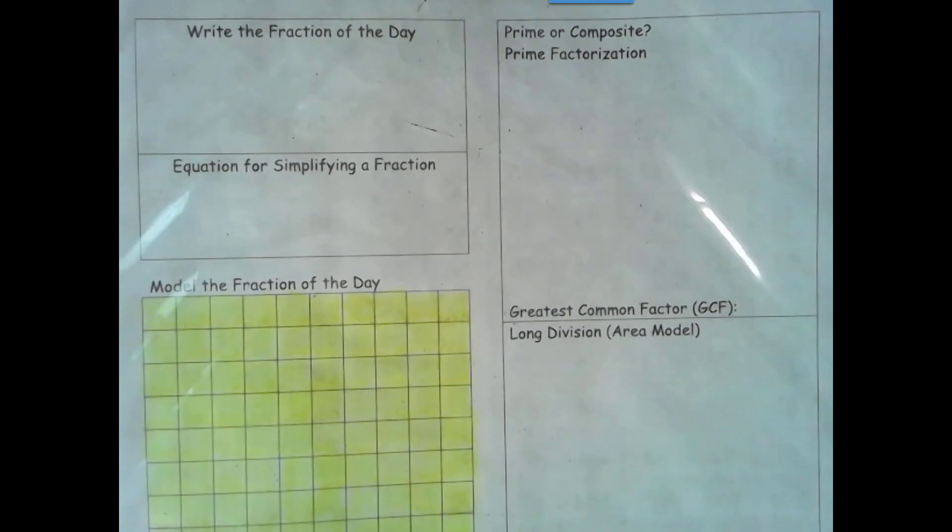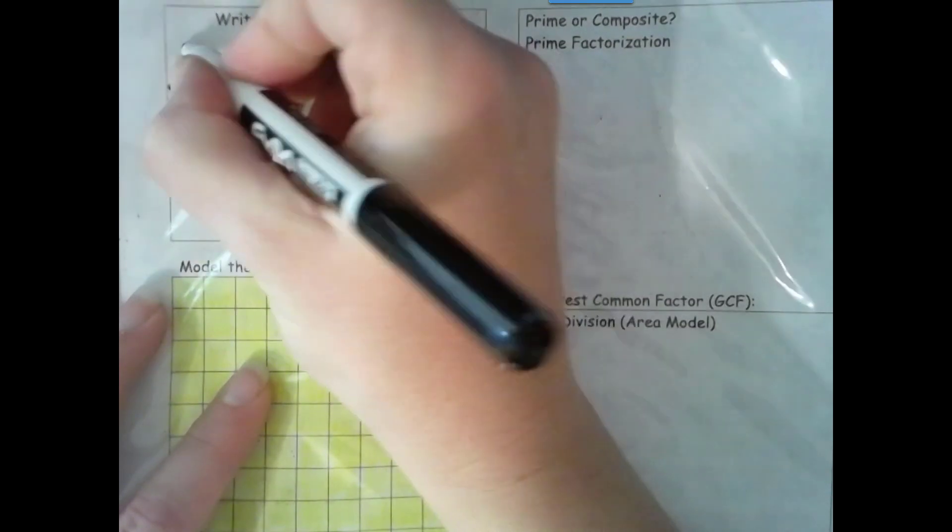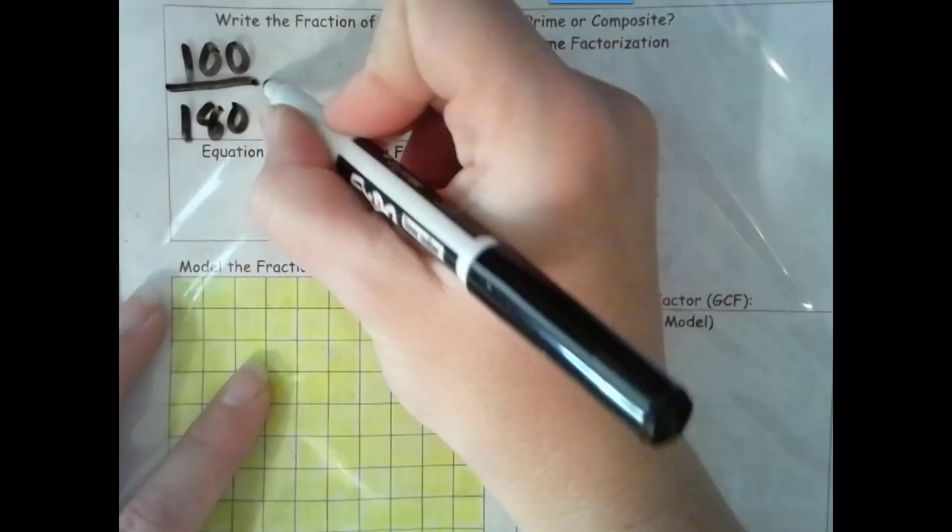Let's go ahead and get down our beginning fraction. A total of 180 school days and we are on day 100, with 80 days left.